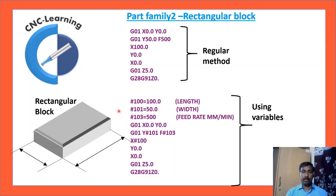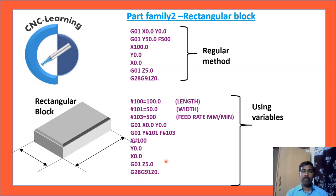This is how part families are defined. If you are doing a similar kind of part again and again, you need to make the program only once. Then what you need to do is only change the parameters — whatever macro variables you have defined. Just change those variables to what is given in the drawing. Once you define that, your program for the next part family member would be ready.